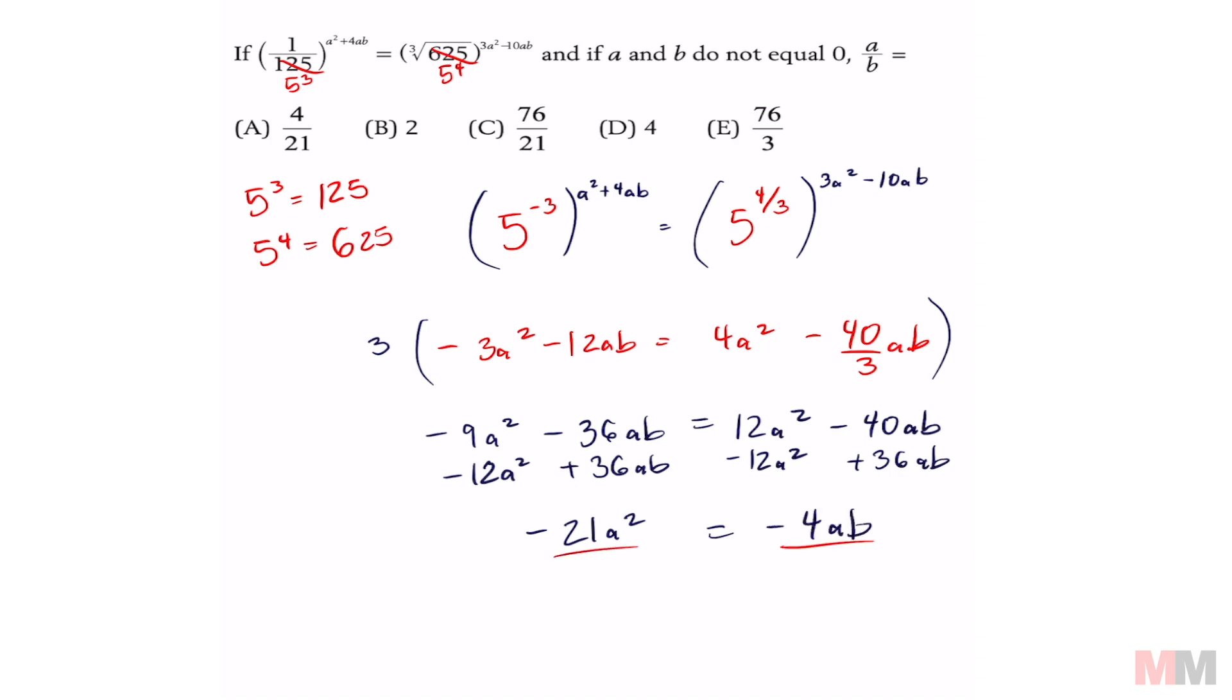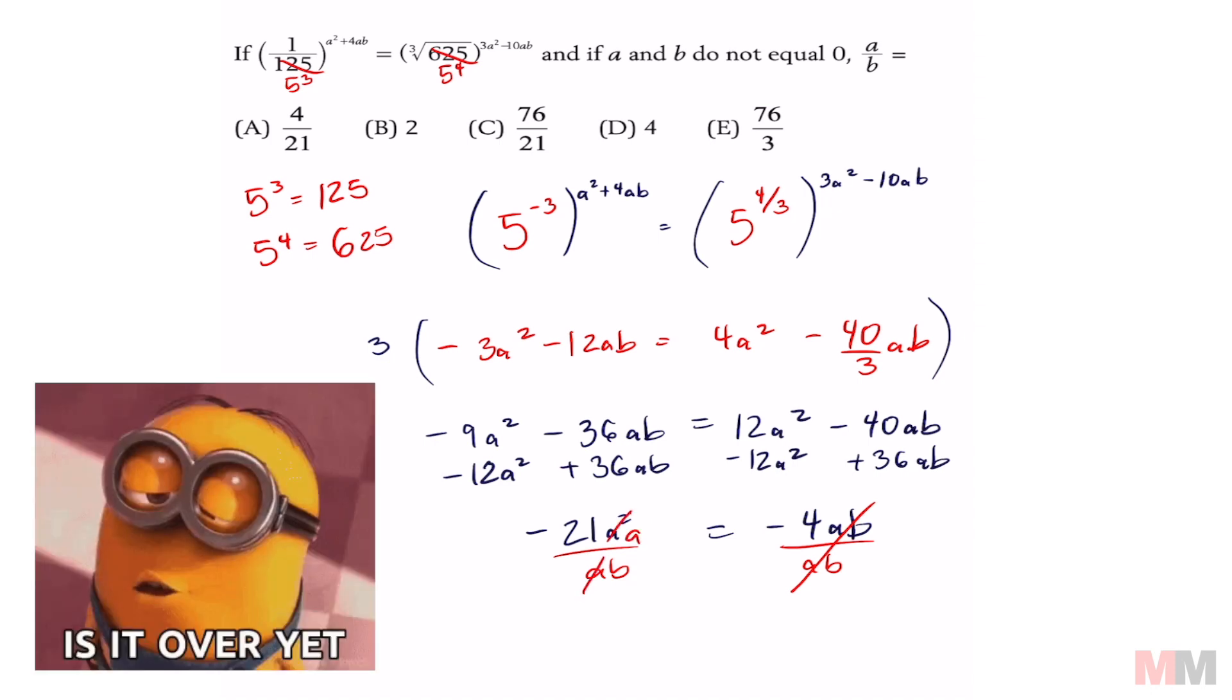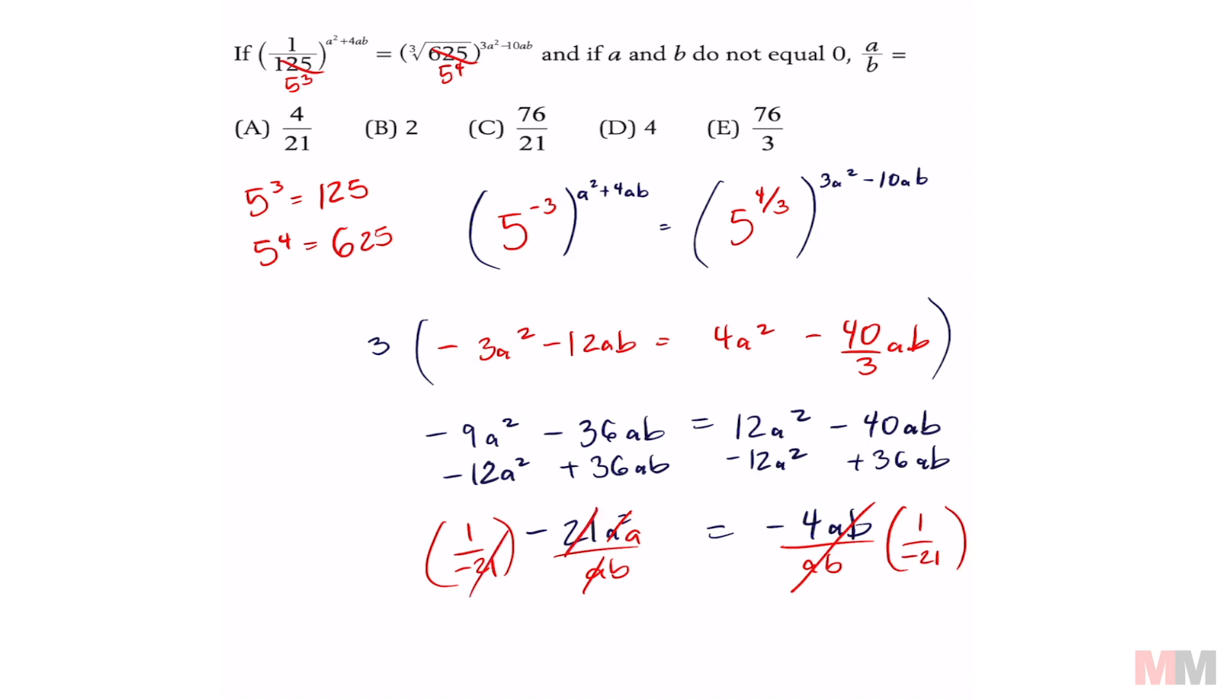Dividing both sides by a b. Going to cancel these out. A squared over a is going to simplify to just an a on the numerator. And the last step is to just multiply by one over negative 21 on both sides. Cancel this out. And we're finally left with ratio of a/b equaling to the negatives cancel out four over 21.